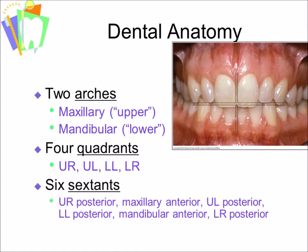We have six sextants — we can divide the mouth into six portions: upper right posterior, maxillary anterior, upper left posterior, lower left, mandibular anterior, and lower right posterior sextants. The dividing lines are drawn between the canines and the premolars — specifically, you divide anterior teeth from posterior teeth between the canine and the first premolar.